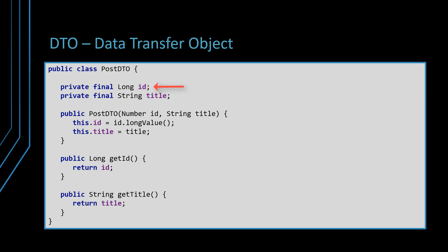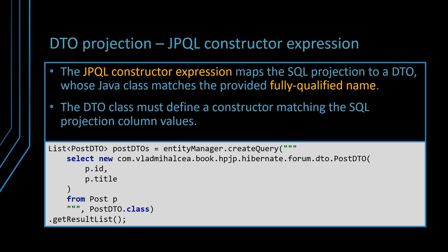The ID column type is bigint; however, depending on the underlying JDBC driver, a bigint column value can be fetched either as a long or a BigInteger Java object. To accommodate both options, you can use the Number object type in the DTO constructor argument and extract the long value prior to initializing the ID field. The JPQL constructor expression maps the SQL projection to a DTO whose Java class matches the provided fully qualified name. The DTO Java class must define a constructor matching the SQL projection column values.